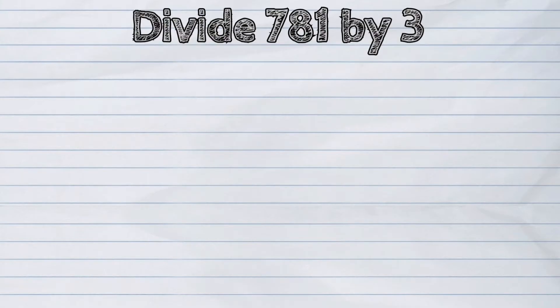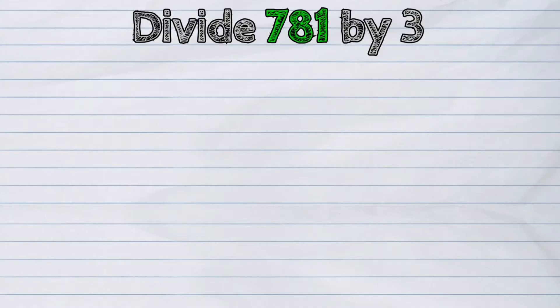Now, let's study this example. Divide 781 by 3. First, we need to arrange the numbers in a division bracket.